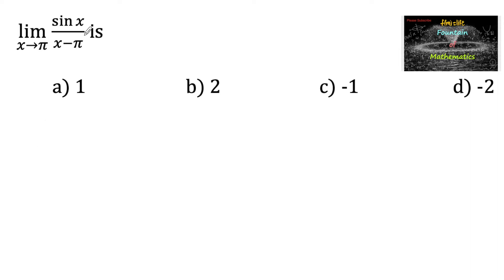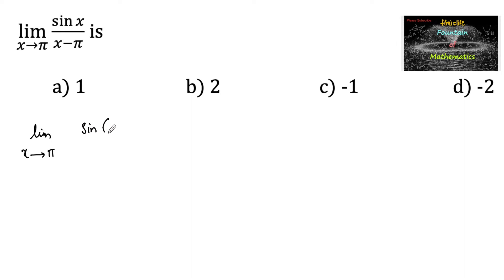Limit x tends to pi of sin(x) upon (x minus pi). We can write this as limit x tends to pi of sin(pi minus x) divided by negative of (pi minus x).